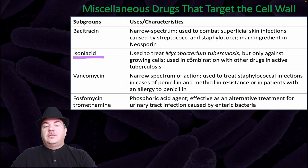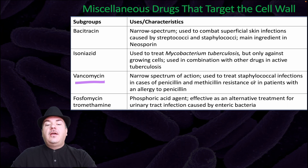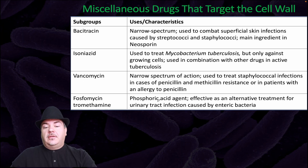Isoniazid is used to treat Mycobacterium tuberculosis, but only against growing cells, and is used in combination with other drugs in active tuberculosis. Vancomycin has a narrow spectrum of action, used to treat staphylococcal infections in cases of penicillin and methicillin resistance, or in patients with an allergy to penicillin. Fosfomycin trometamol is a phosphoric acid agent effective as an alternative treatment for urinary tract infections caused by enteric bacteria.